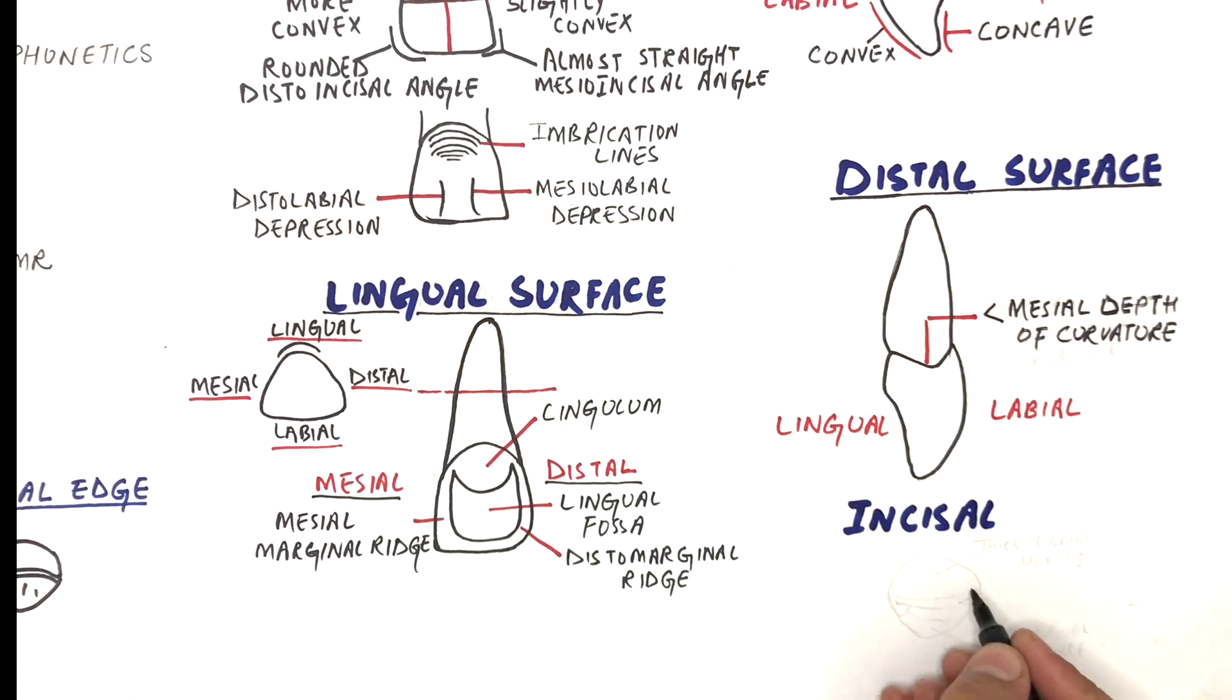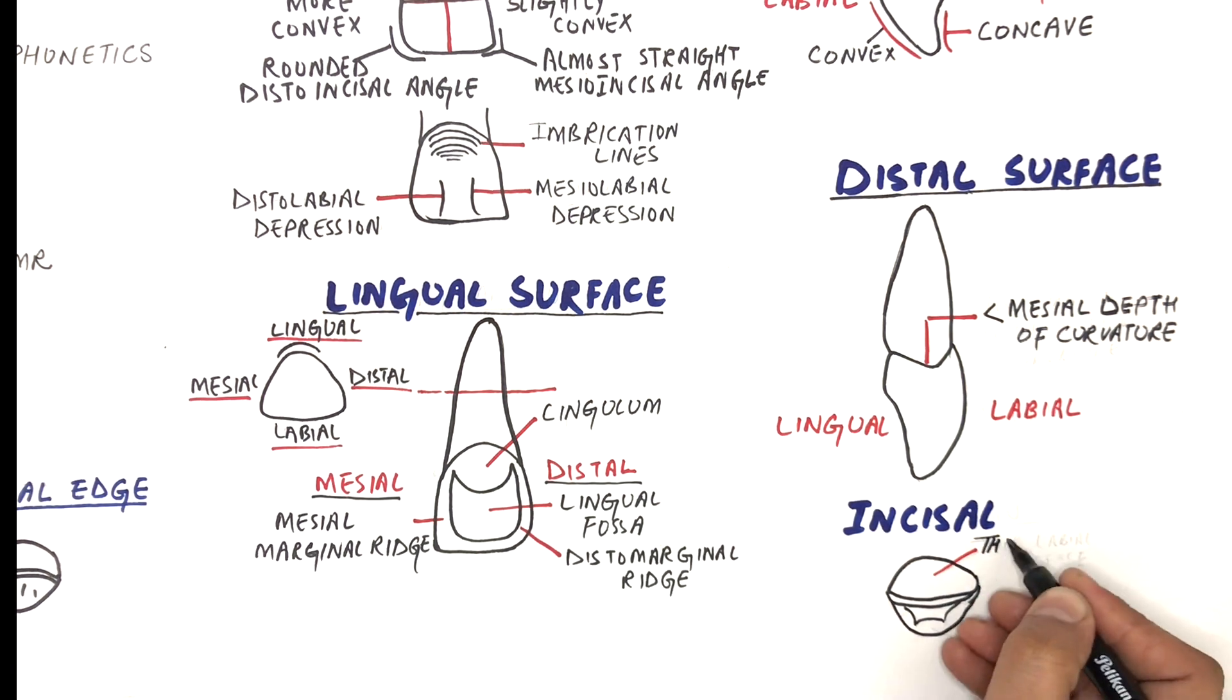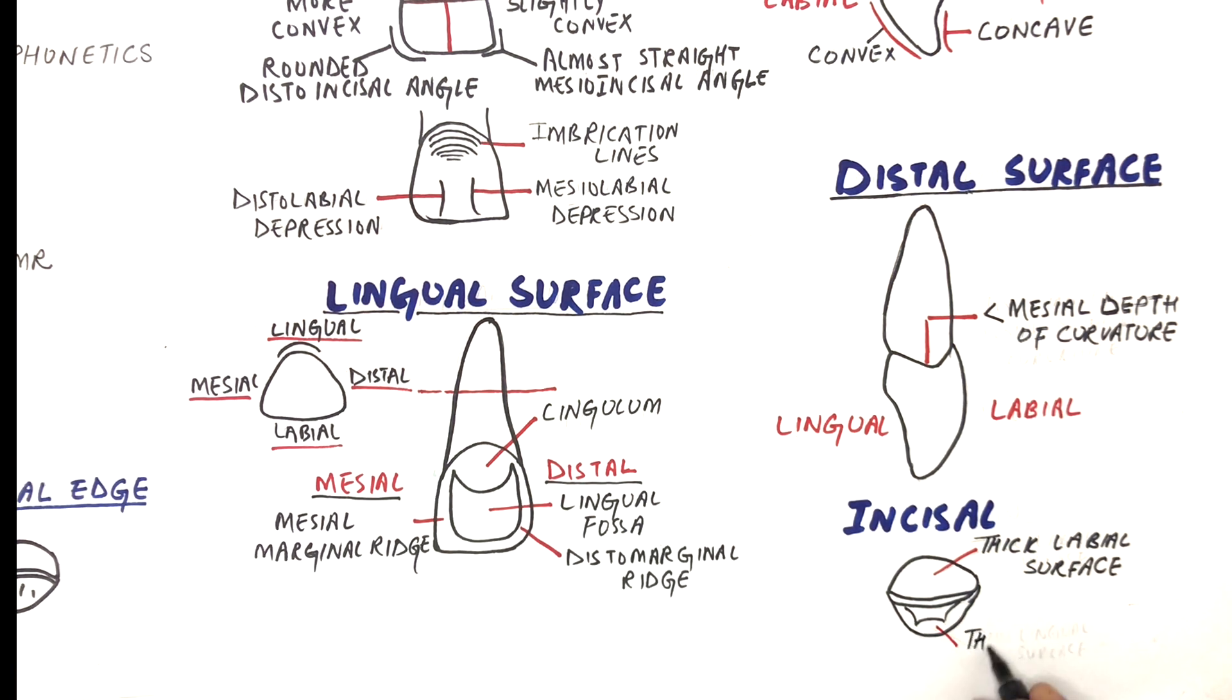The incisal outline may exhibit mamelons. Without mamelons, the outline is generally straight and almost perpendicular to the long axis of the tooth. The bulk of the crown at the labial aspect is more than the lingual aspect.